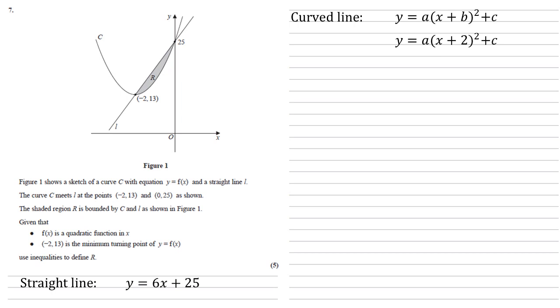We can now put in our points to find our other two unknowns, a and c. So putting in minus 2, 13, we get that 13 equals a times minus 2 plus 2 all squared plus c. That bracket's equal to 0, so c is equal to 13.